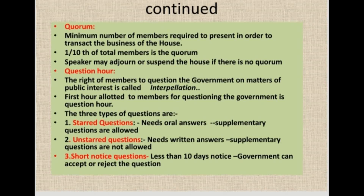For example, if there are 250 members in the house, then 25 members should be present to begin the business of the house. If this quorum is not present on a particular day, the speaker or chairman may adjourn the house or suspend it for not having quorum. He cannot begin the proceedings without having this one-tenth of members as quorum.